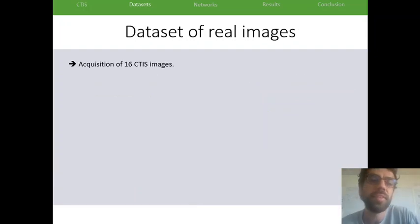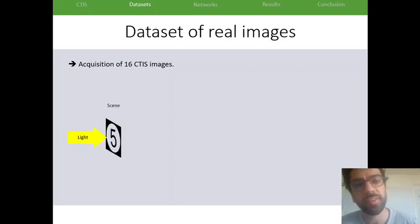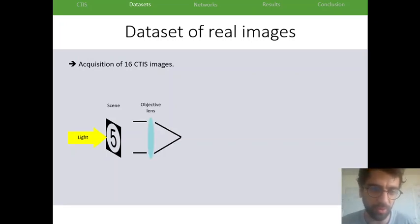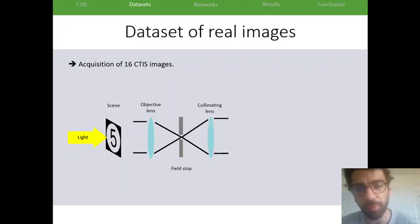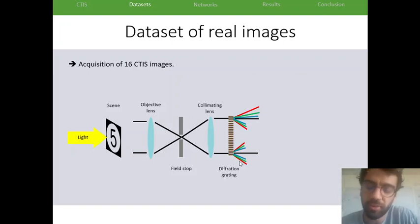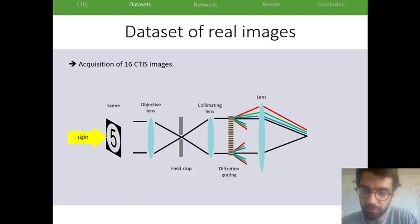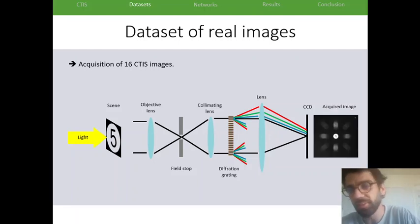So to test this idea out, we created some datasets to conduct a classification task on. We acquired 16 CTIS images. So we sent light through a scene, and then we reproduced a CTIS system. The light went through an objective lens, there was a field stop, a collimating lens, and then the diffraction grating to separate the spectral information, a lens at the end. And on the CCD, we got CTIS images as the ones I showed you before.